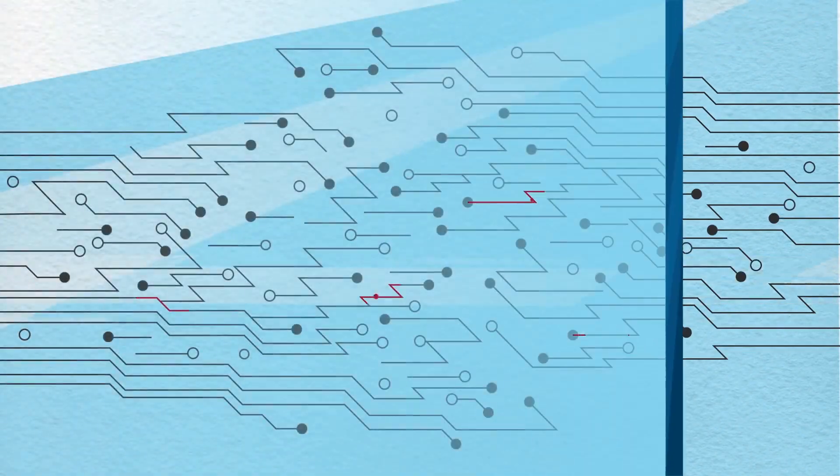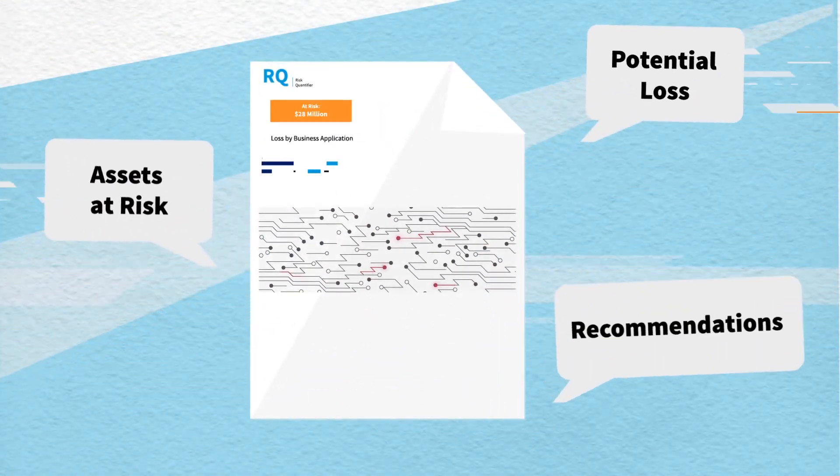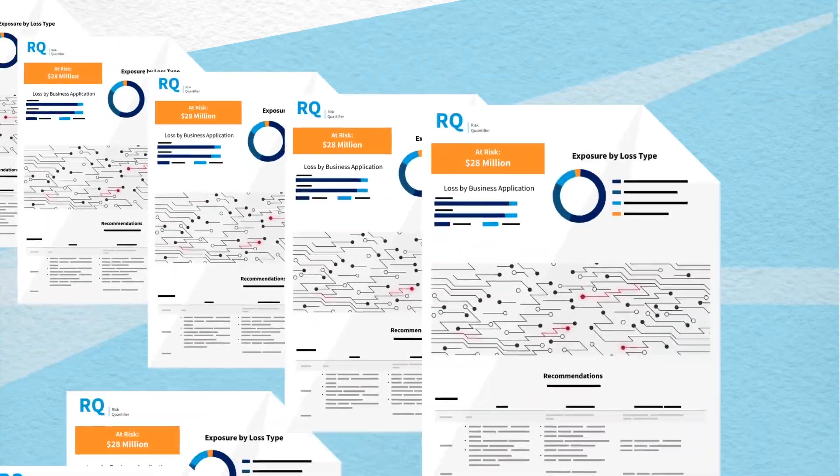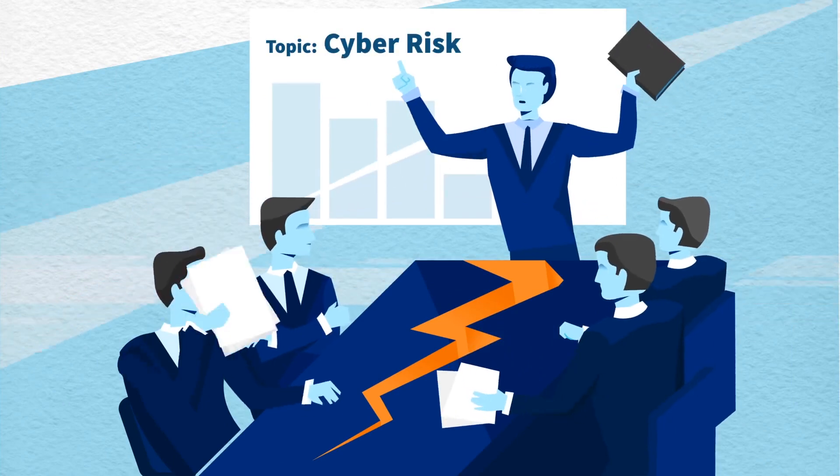Companies looking to continuously monitor their risk can use RQ's automated capabilities to run reports daily, weekly, or even quarterly, and align communication in the boardroom.